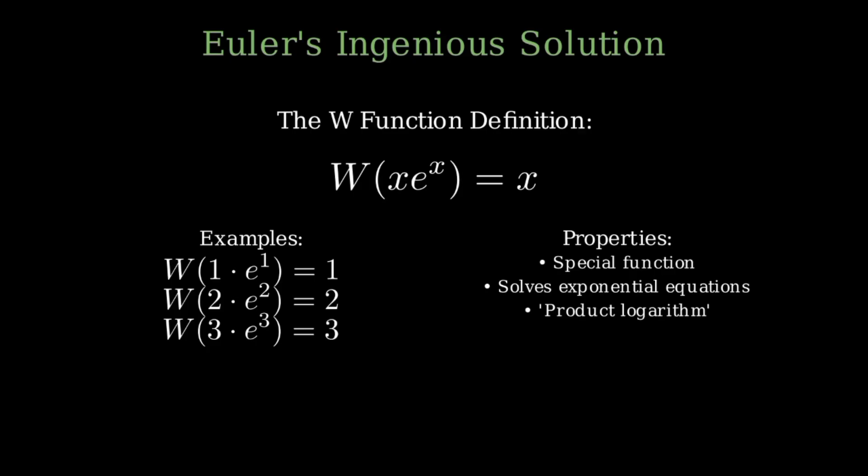Euler had created what we now call a special function, a mathematical object that could solve exponential equations that seemed impossible before. It's sometimes called the product logarithm because it undoes the operation of multiplying by an exponential.